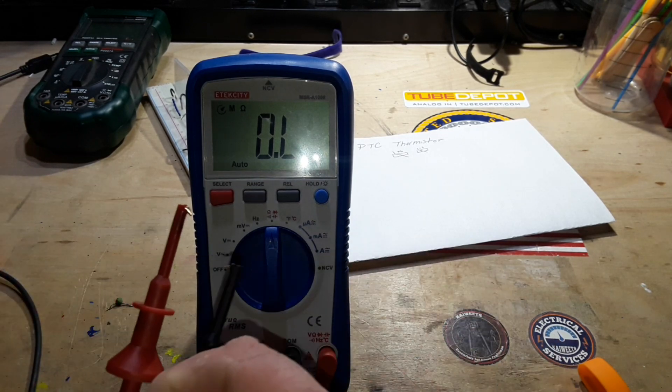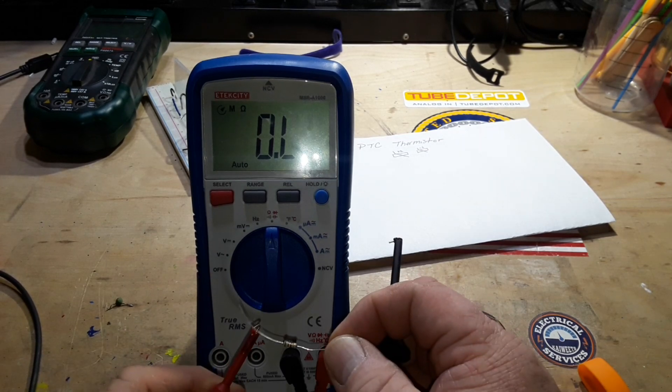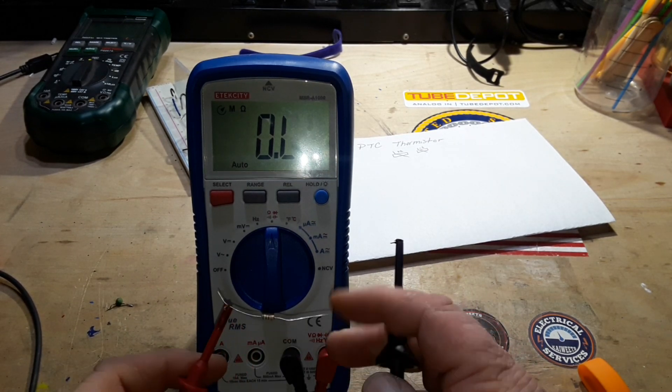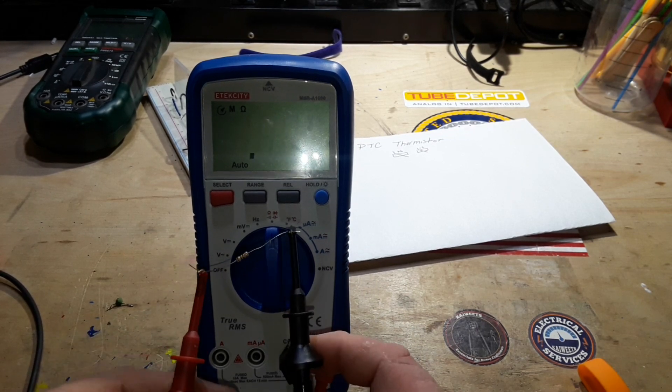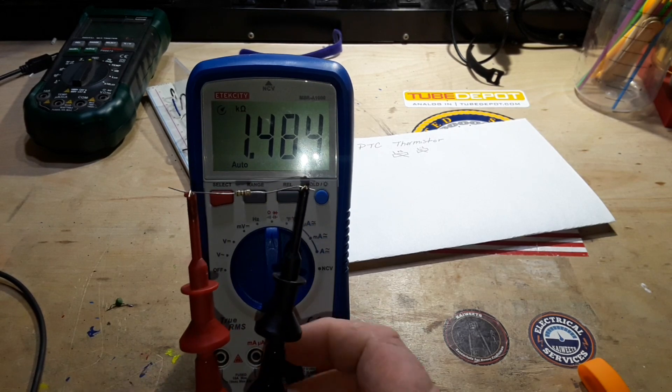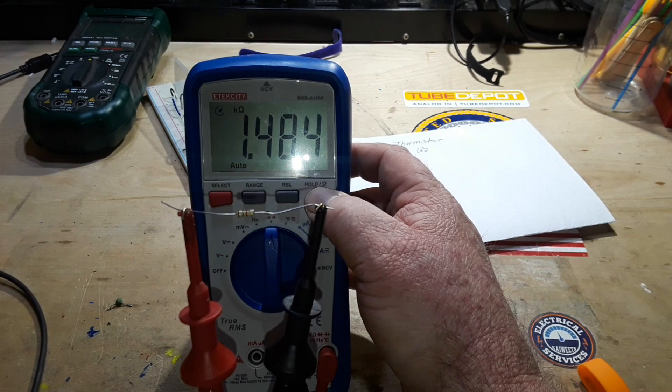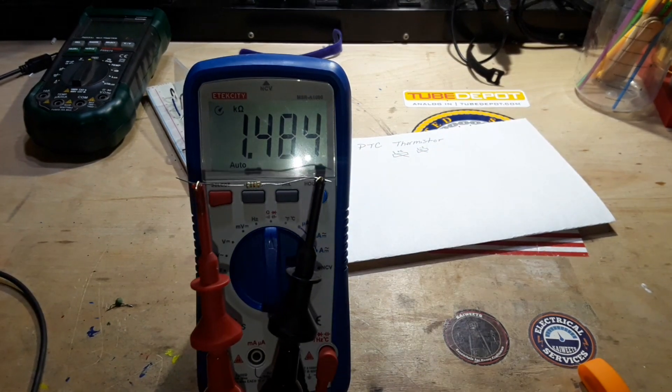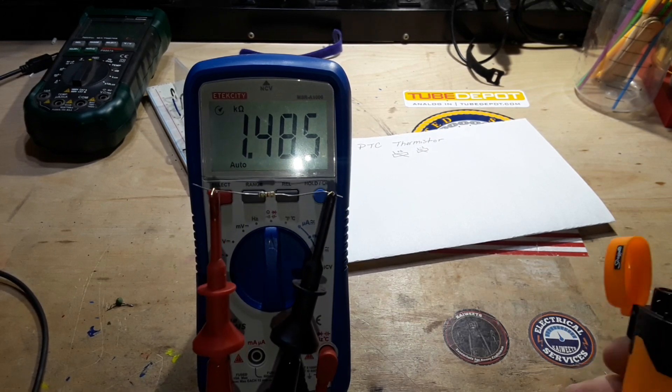Now remember, all resistors work in the same way. They have a material within them that is a semi-insulator. And they take the current that passes through them and they dissipate it as heat. So here is a standard. This is supposed to be a 1.5K. You can see it's a little off there.